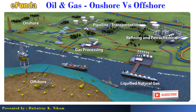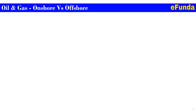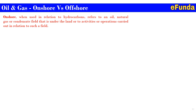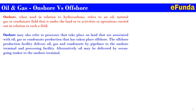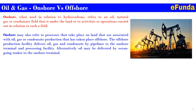So let's begin with our today's topic — Oil and Gas Onshore vs Offshore. Onshore, when used in relation to hydrocarbon, refers to an oil, natural gas, or condensate field that is under the land, or to activities or operations carried out in relation to such a field. Onshore may also refer to the processes that take place on land. The offshore production facility delivers oil, gas, and condensate by pipeline to the onshore terminal and processing facilities.